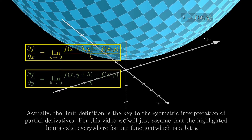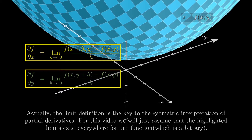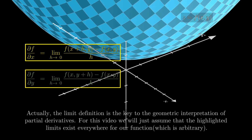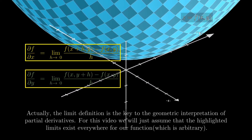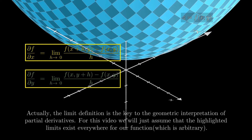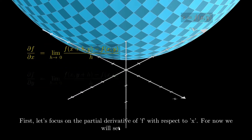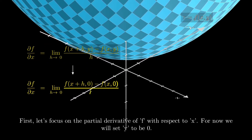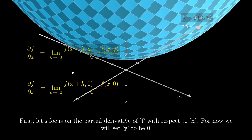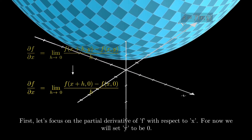The limit definition is the key to the geometric interpretation of partial derivatives. For this video, we will just assume that the highlighted limits exist everywhere for our function. Let's focus on the partial derivative of f with respect to x, and for now we will set y to be zero.